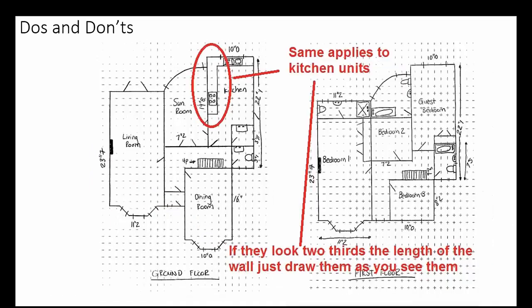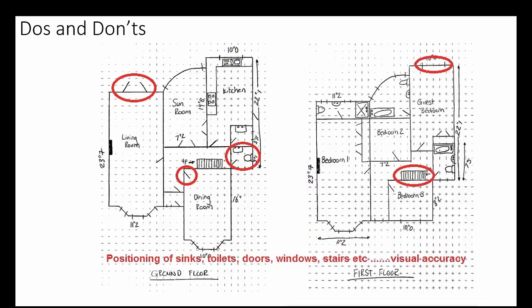Same applies to kitchen units and other symbols that you're going to put on the floor plan. If you're in the kitchen, if those kitchen units look as though they're two-thirds the length of the wall, just draw them as you see them. Don't start measuring everything. Visual accuracy is the key. You'll see when you go to draw the floor plan on Metropix that you can draw everything exactly to the inch or centimetre. The degree of accuracy is fantastic. But you just simply won't have enough time to record everything in such detail when you're sketching at the property.